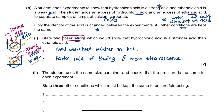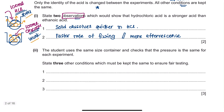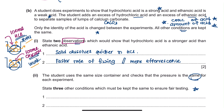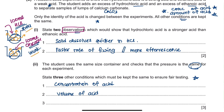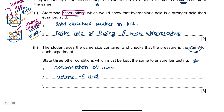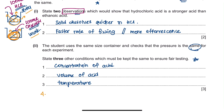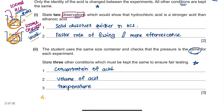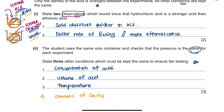The last question: state three other conditions which must be kept the same to ensure fair testing. You need the same concentration of acid, the same amount of acid, and the same temperature of the solution or acid. Another acceptable answer is that the amount of calcium carbonate solid sample used should also be the same for both HCl and ethanoic acid.